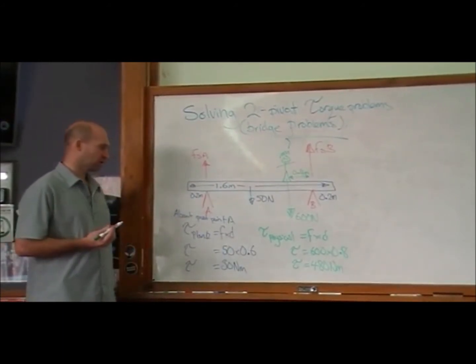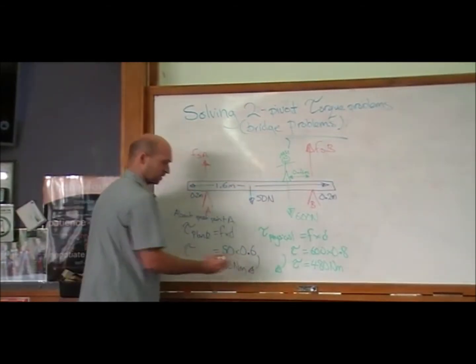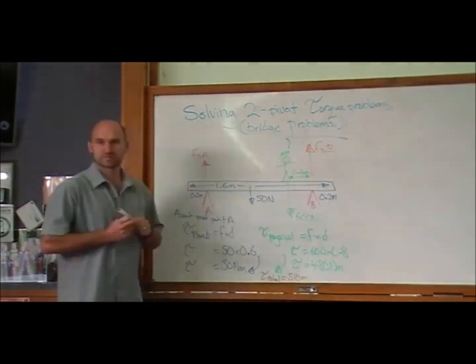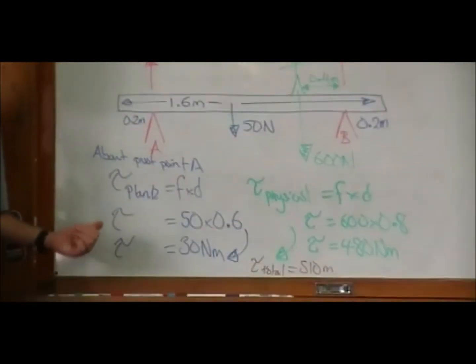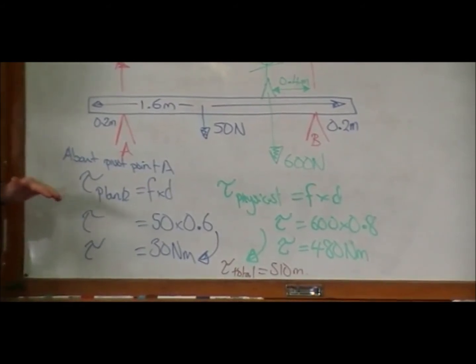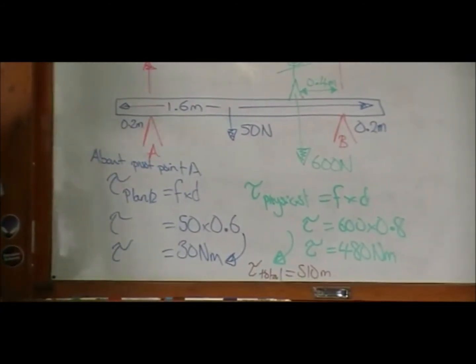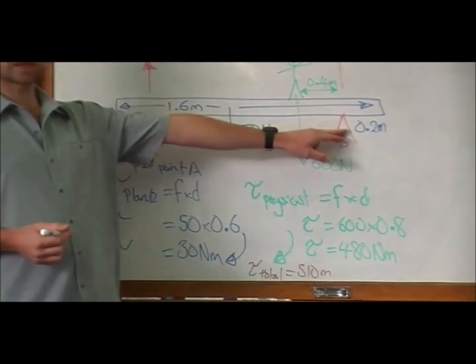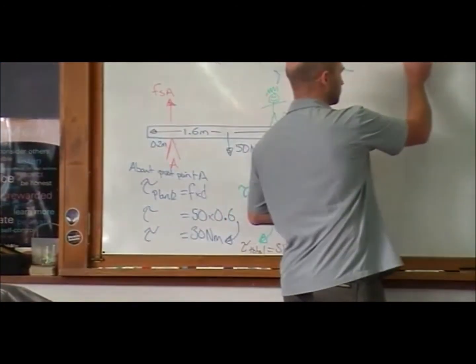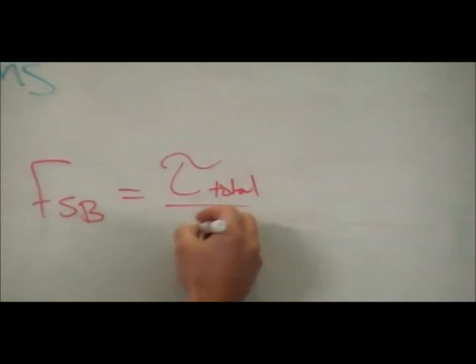What's our total torque clockwise? These torques are both acting that way. How much is our total torque? 510. 510 newton-meters. And so what we know is that for equilibrium, because this bridge isn't twisting, this plank isn't twisting, we know that the torque anti-clockwise must be the same as the torque clockwise.